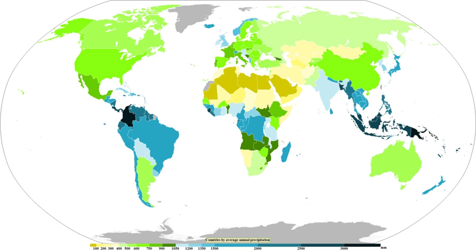The wet, or rainy, season is the time of year, covering one or more months, when most of the average annual rainfall in a region falls. Areas with wet seasons are dispersed across portions of the tropics and subtropics. Savannah climates and areas with monsoon regimes have wet summers and dry winters. Tropical rainforests technically do not have dry or wet seasons, since their rainfall is equally distributed through the year. Some areas with pronounced rainy seasons will see a break in rainfall mid-season when the intertropical convergence zone or monsoon trough moves poleward during the middle of the warm season. When the wet season occurs during the summer, rain falls mainly during the late afternoon and early evening hours.